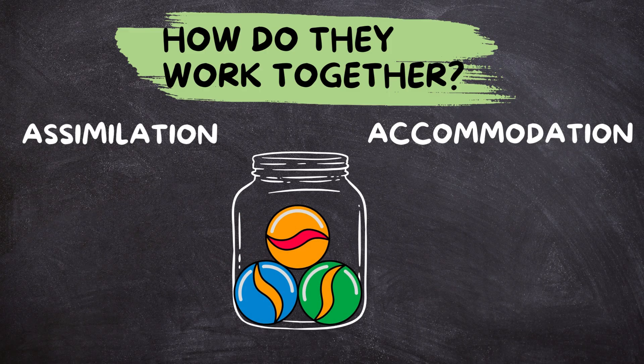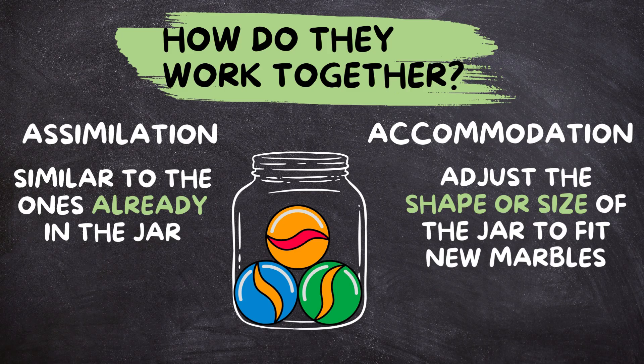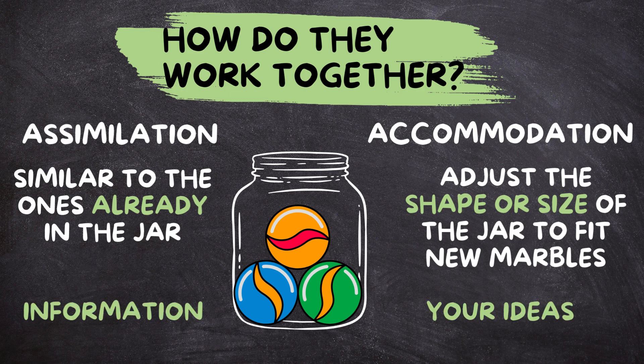Assimilation is when you put marbles that are similar to the ones already in the jar. Accommodation is when you adjust the shape or size of the jar to fit new marbles that are different. So as you learn, you're constantly adding new marbles — information — and adjusting the jar, your ideas, to fit them.